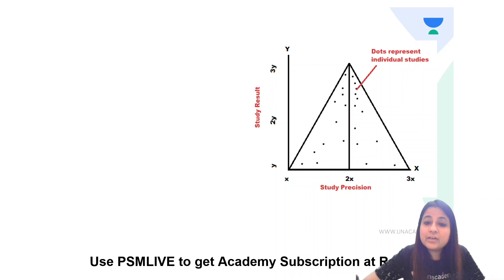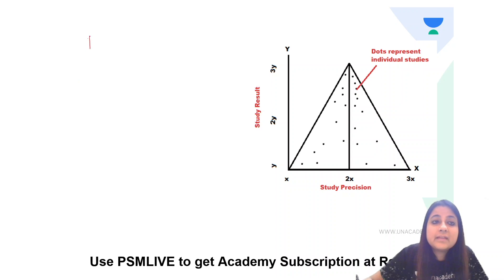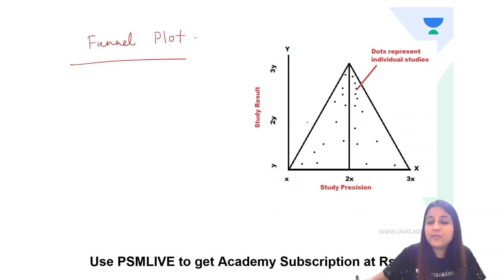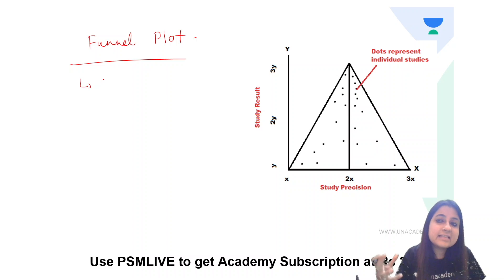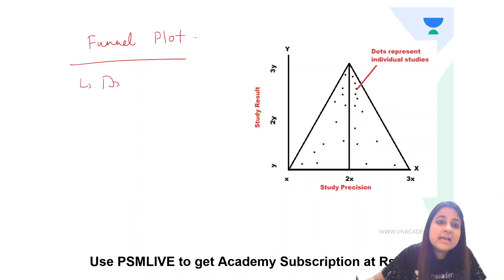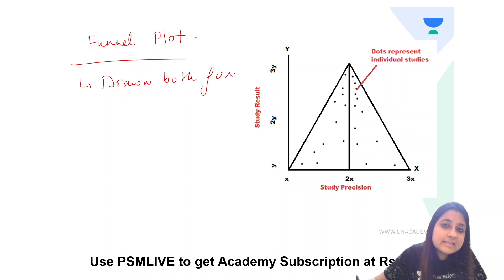So let us have a look at the next image for the day. What is this image? This is an image of a funnel plot. It looks like a funnel. Where is this drawn? You could be asked: is it drawn in a meta-analysis? Yes. Is it drawn for a systematic review? Yes. Funnel plot is drawn both for systematic review as well as meta-analysis.